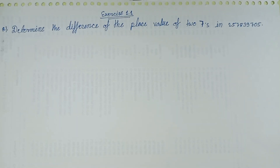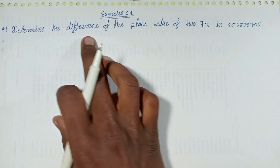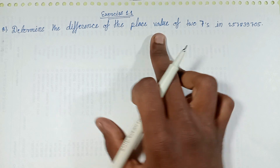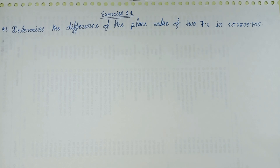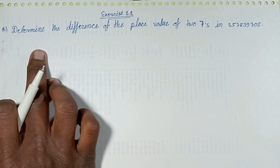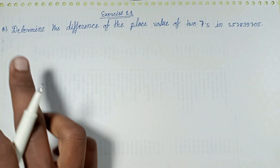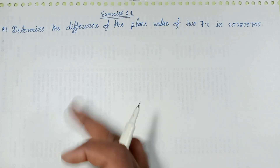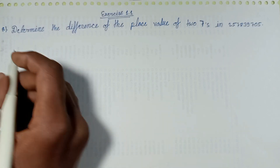Bande Matram everyone, welcome back to a new episode. This episode discusses exercise 1.1, question number 8: determine the difference of the place value of two sevens in these numbers. Question number 7 and question number 9 solution episode links are given in the description box.